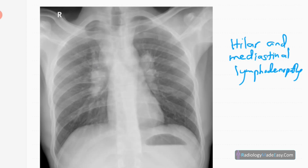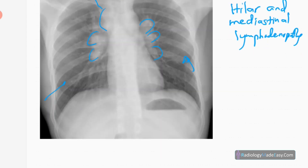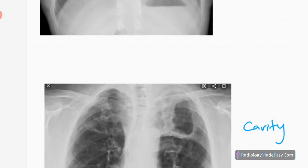Next is lymphadenopathy in TB. You can see multiple hilar prominences and right paratracheal prominence — hilar and mediastinal lymphadenopathy. The differential diagnosis for this appearance includes sarcoidosis stage 1 and lymphoma. The lung fields are relatively spared with no effusions. The main finding is hilar and mediastinal or right paratracheal lymphadenopathy.